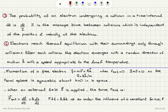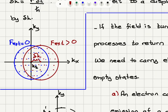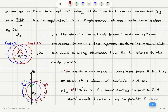Here, h-bar is the reduced Planck's constant h divided by 2π. Under the influence of a constant force acting for a time interval delta-t, every state has its k-vector increased by delta-k, where delta-k equals F times delta-t over h-bar. This is equivalent to a displacement of the whole Fermi sphere by delta-k. When there is no external force the Fermi sphere is symmetric around the origin; with an external force, the sphere shifts so that the origin has moved by delta-k and all states are displaced by that amount.